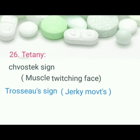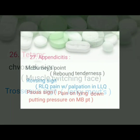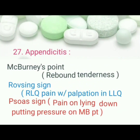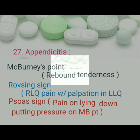Tetany: pathognomonic sign is Chvostek's sign, muscle twitching of the face, and Trousseau's sign, jerky movements. Appendicitis: pathognomonic sign is McBurney's point, rebound tenderness, Rovsing's sign with right lower quadrant pain on palpation, and Psoas sign with pain on lying down and putting pressure on McBurney's point.